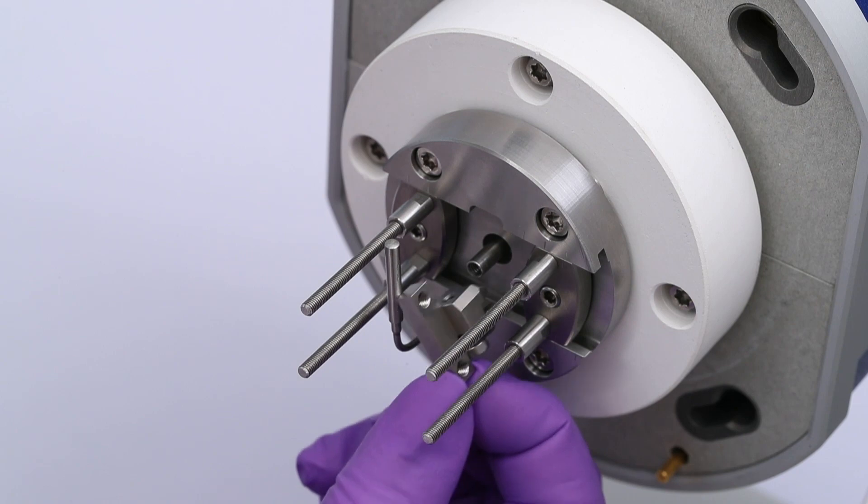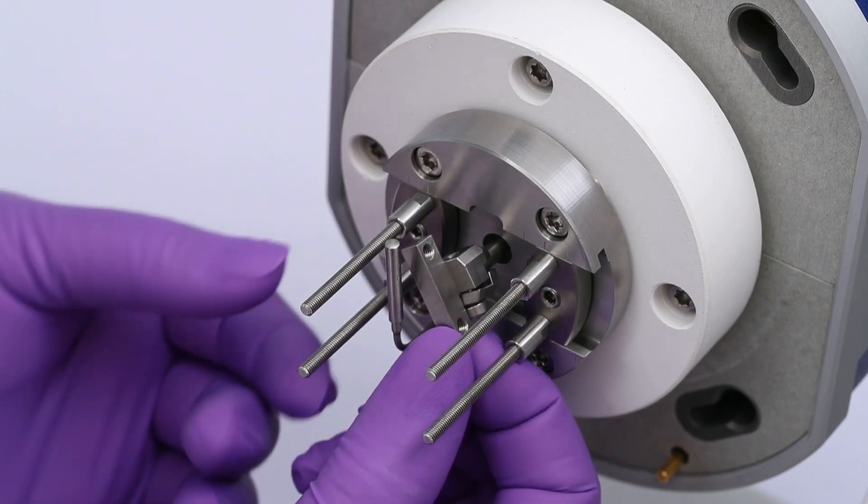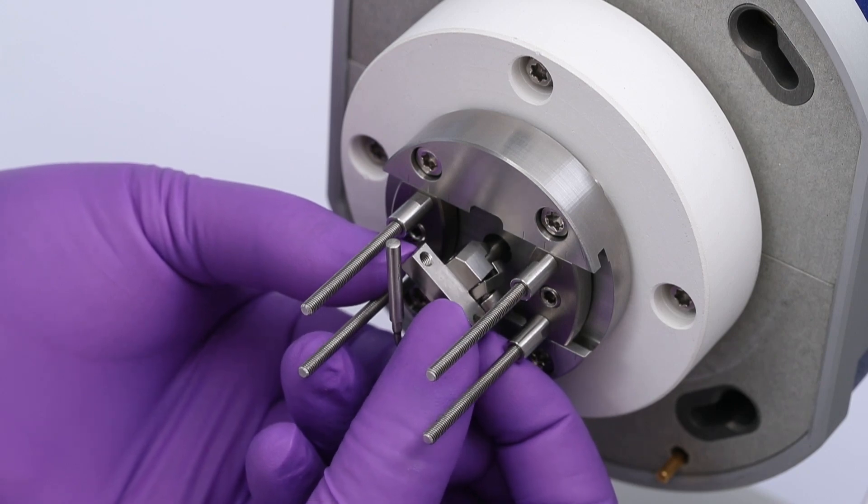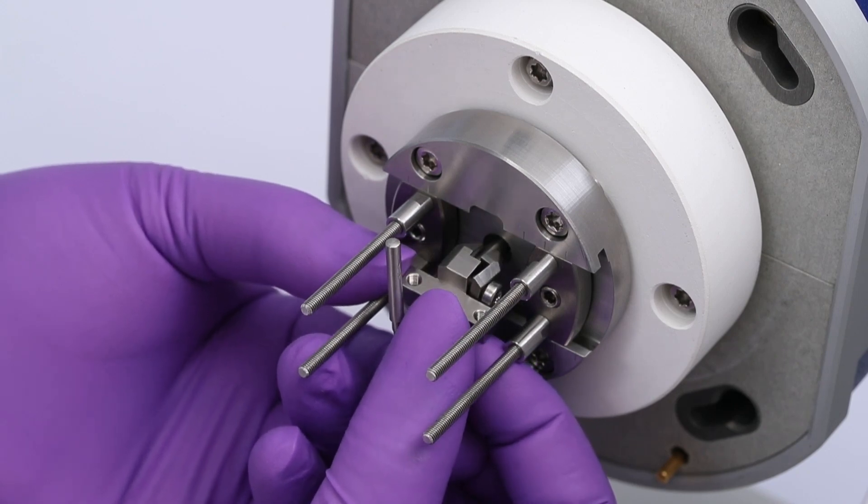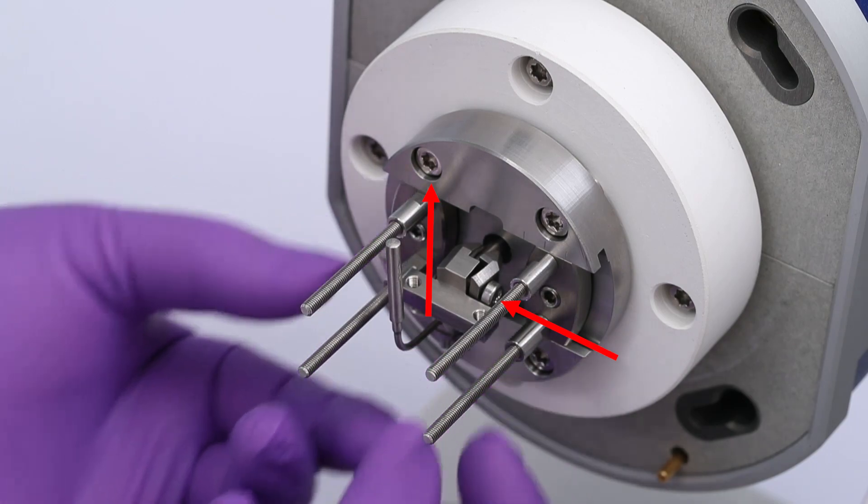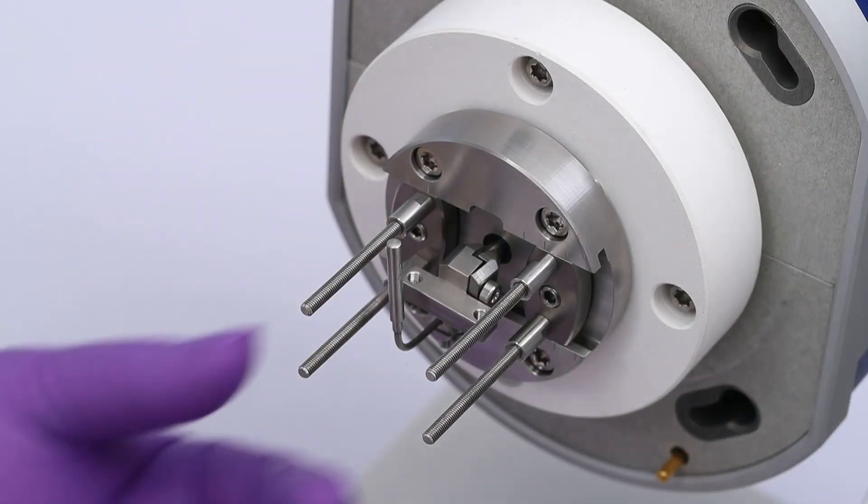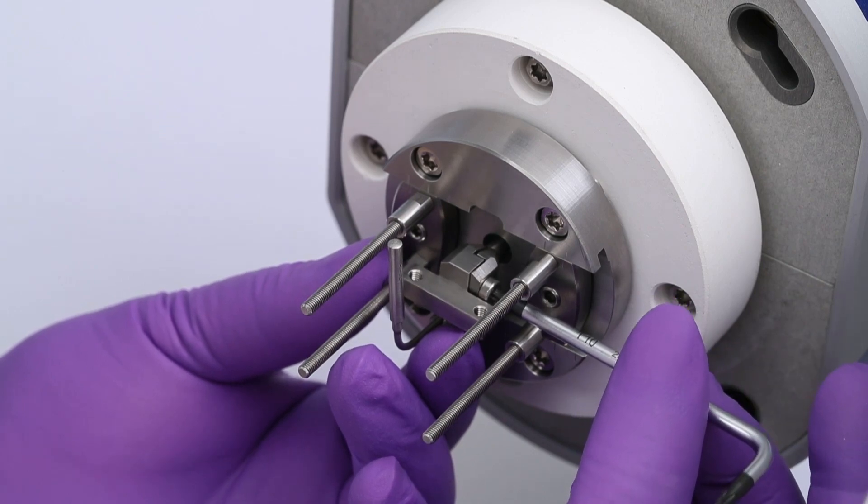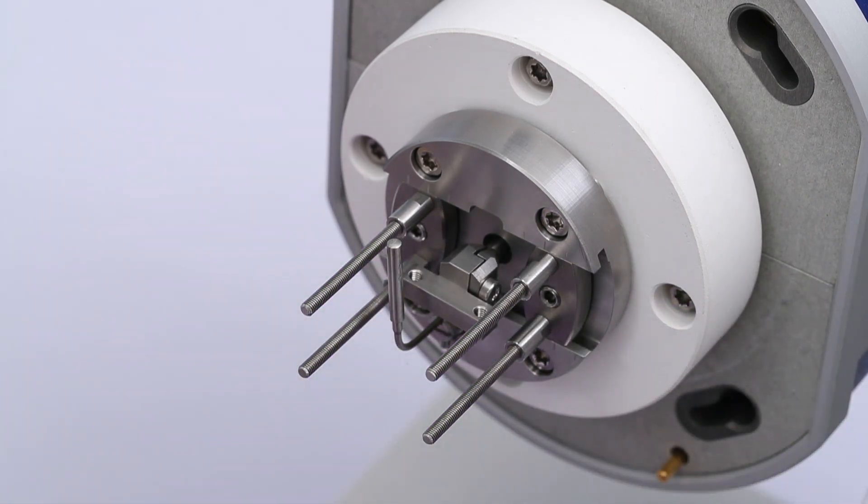Carefully fit the tension clamp onto the drive shaft. Ensure the securing screw is facing towards the right, such that the clamping surface is facing upwards. Gently screw on the securing screw using the T10 Torx key to fix the clamp part, but do not tighten.